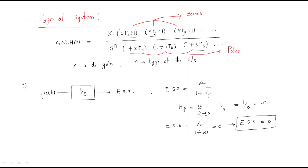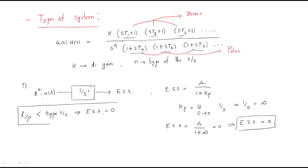Observing this result: for u(t), there is no t term — we can write it as t⁰·u(t), so the input power is 0. The system G(s) = 1/s has s-power 1, so the system type is 1. Since input power (0) is less than system type (1), the steady-state error is 0. This is an important general point: when input t-power is less than system type, steady-state error becomes 0.